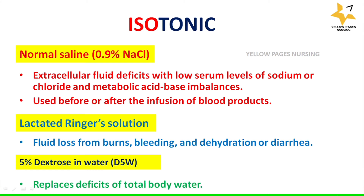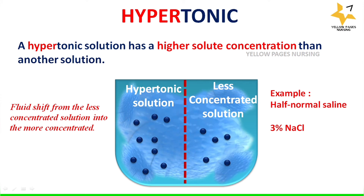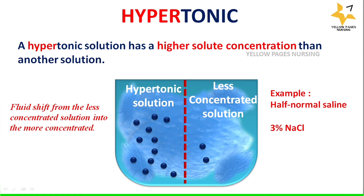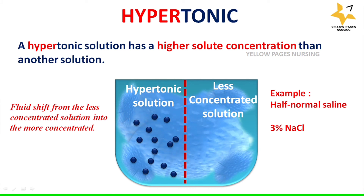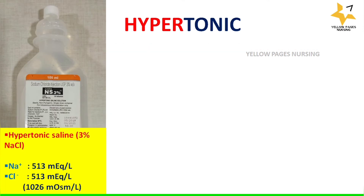Now comes hypertonic solution. As the name suggests, it has a higher solute concentration than another solution. By placing two solutions together, fluid shifts from the less concentrated solution to the hypertonic solution. An example of a hypertonic solution is 3% sodium chloride.